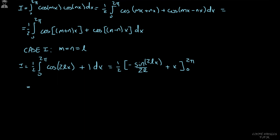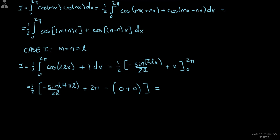Plugging in the limits: one-half times [−sine(4πl)/(2l) + 2π], minus [sine(0) + 0]. Since 4πl is an integer multiple of 2π, sine(4πl) = 0. So the result is one-half times 2π, which equals π. This is our answer for Case 1.